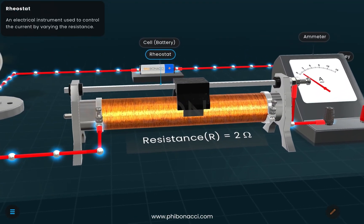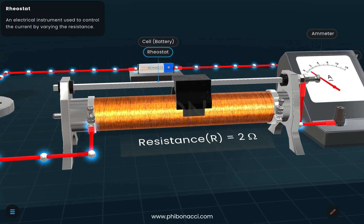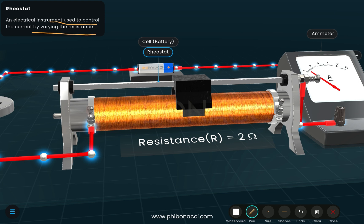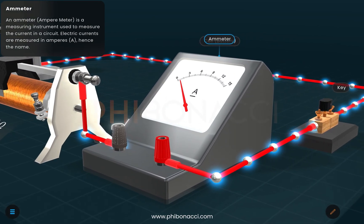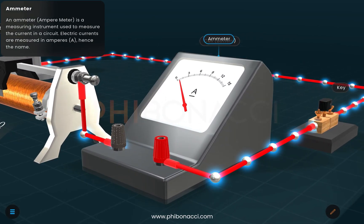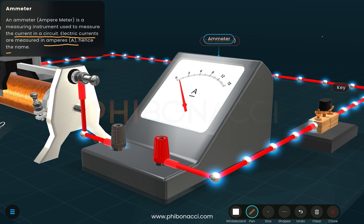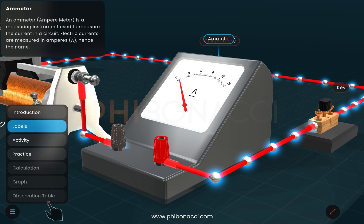We can click on each component to see its definition. For the rheostat, it is a device used to control the current by varying the resistance. For the ammeter, it is a device used for measuring the current in a circuit. The unit of current is amperes, denoted by the capital letter A.